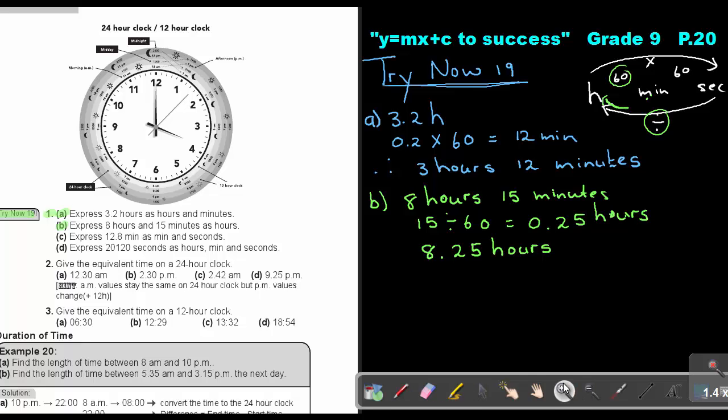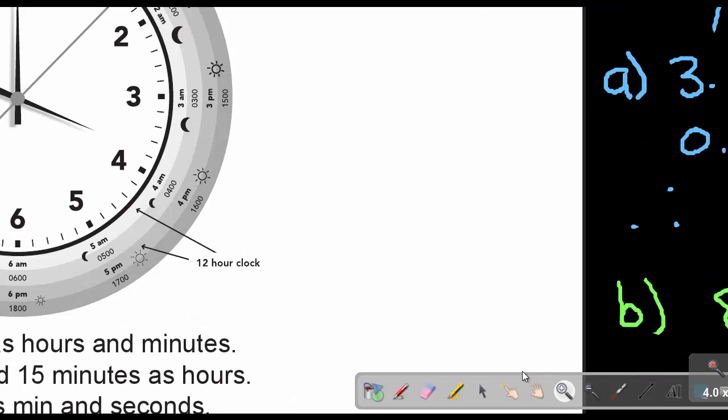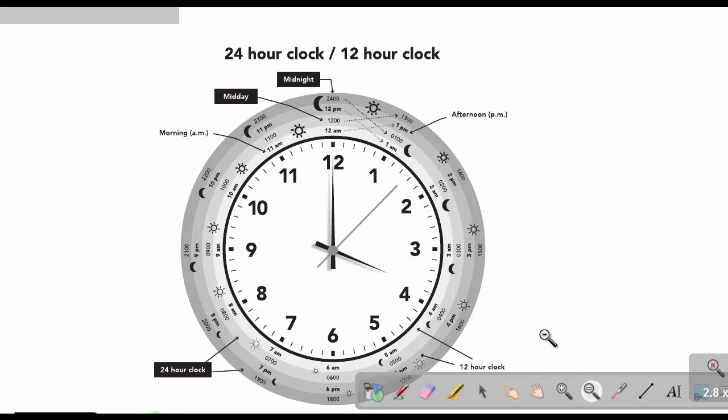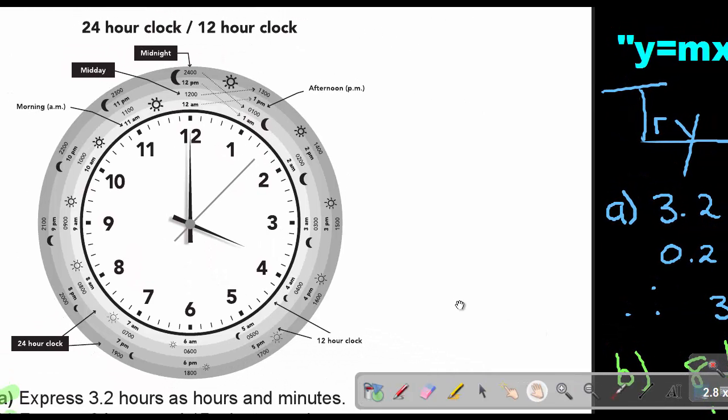I'm going to enlarge this so that you can really see this diagram. Let's just see if we can see it very clear now. Let's just go through this table or this clock. Now we're going to go through the 24 hour clock and the 12 hour clock.